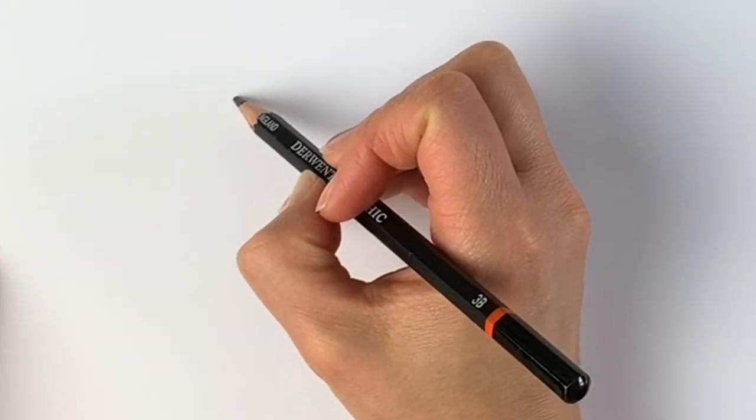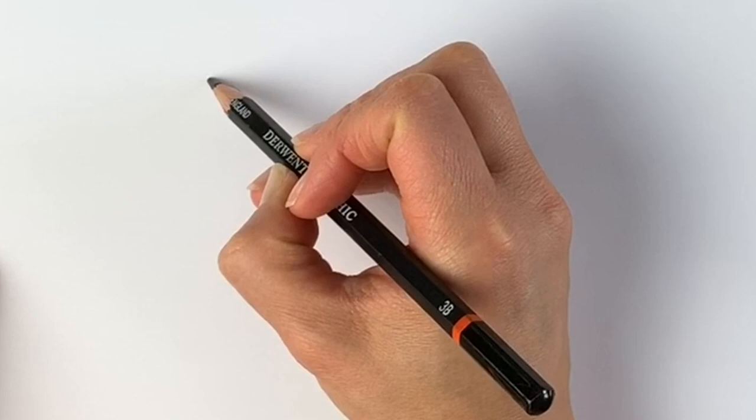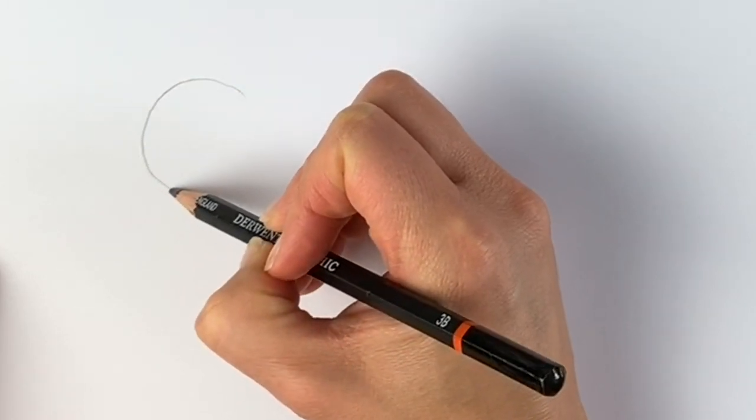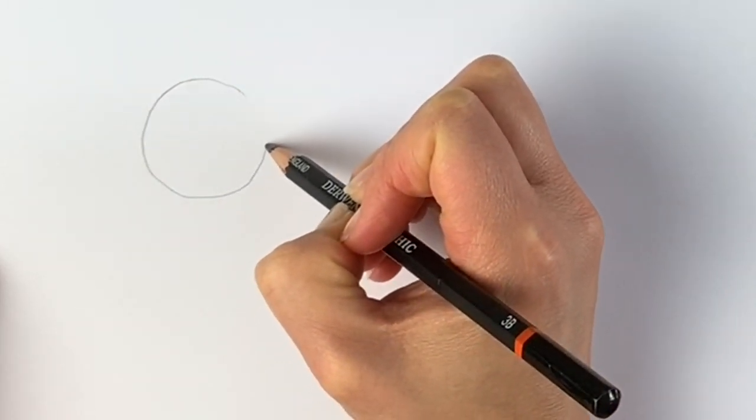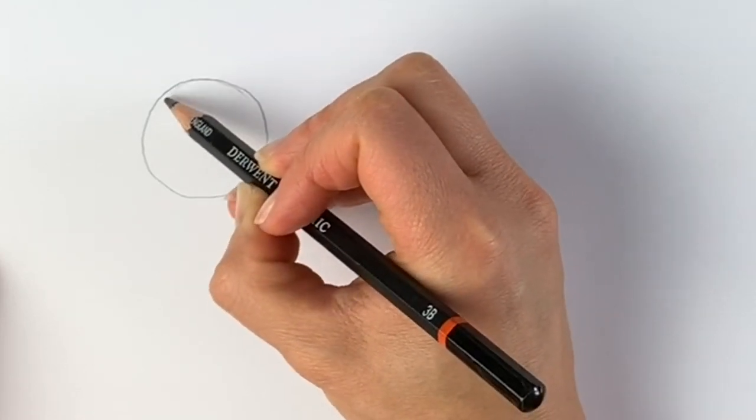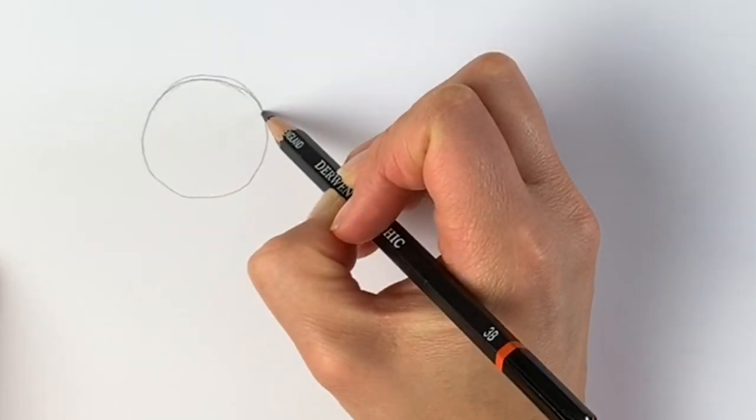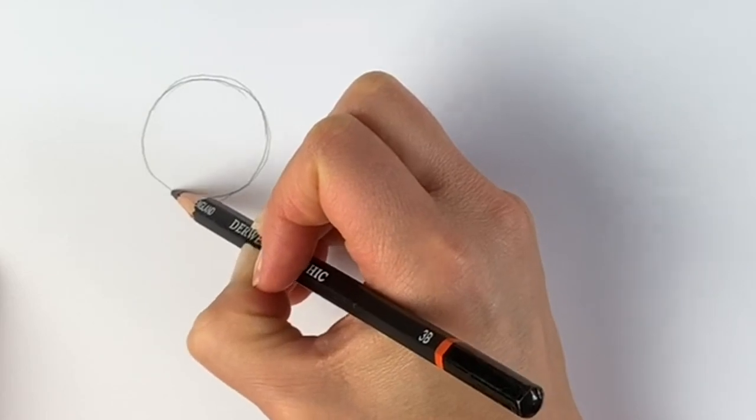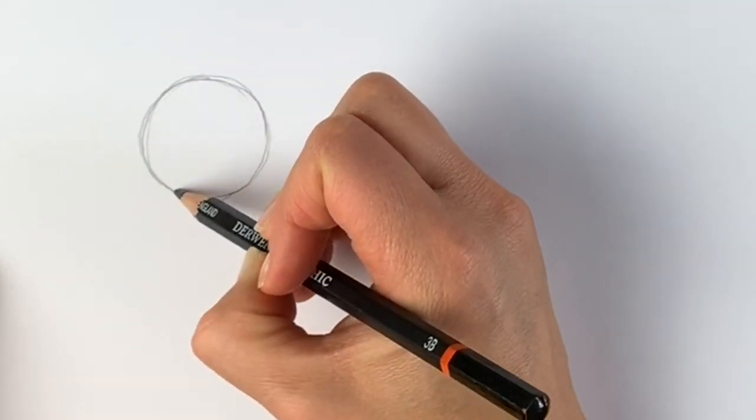Okay, so to start off our grizzly bear, we are going to start off with a circle just on the left-hand side of the page. This is going to be the head area. So it doesn't have to be perfect. If you like, you can draw around a coin or something round, but that's not essential that it's perfect.